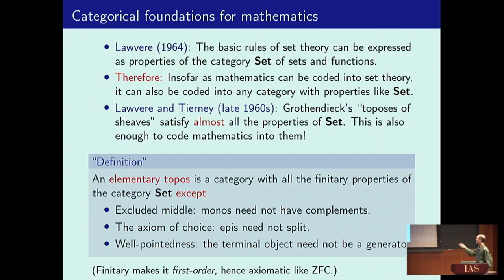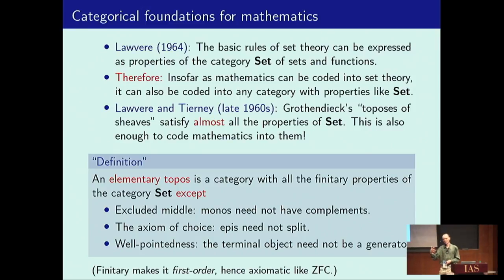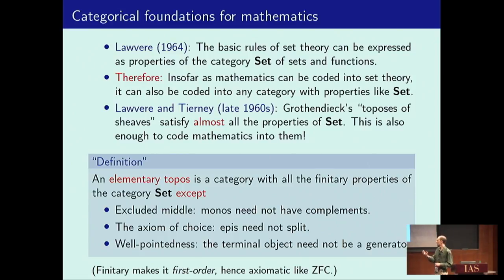A topos is a category with all the finitary properties of the category of sets except for those. Why finitary? The motivation is to make it elementary — a technical logical term, another word is 'first order.' The idea is that it's supposed to be described by a set of syntactic axioms like ZFC, rather than by invoking some external set theory. An example of a non-finitary property is: infinite coproducts exist — because that way you need an external notion of set in order to index your coproducts. We want only finitary ones so we can talk about it as a formal theory analogous to ZFC.